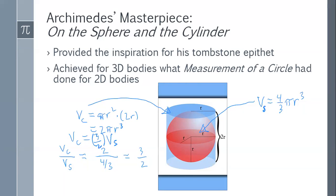Now let's ask another question: what about surface area? Archimedes was blowing everybody out of the water — nobody knew the formula for the volume of a sphere, and nobody could compute the area of the base of a cylinder because they didn't know the formula for the area of a circle. Archimedes was blazing the trail.